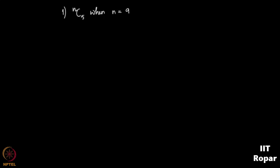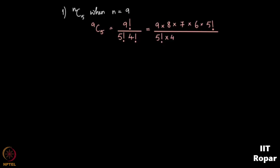Let us compute 9C5. Applying the formula, we get it as 9 factorial by 5 factorial into (9 minus 5) which is 4 factorial. So 9 factorial can be written as 9 into 8 into 7 into 6 into 5 factorial, divided by 5 factorial into 4 into 3 into 2. The 5 factorial cancels on numerator and denominator, and after simplification we get the answer as 126.